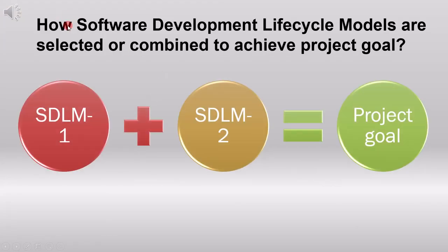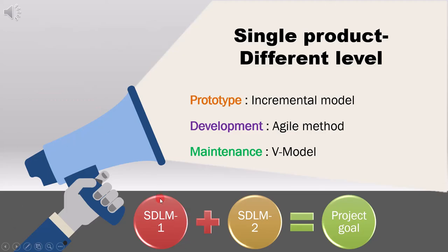Now we'll look at examples of how software development lifecycle models are selected or combined to achieve a project goal. Here we have two models of software development lifecycle — Model 1 and Model 2. We are not combining test levels and activities here, but two software development models in order to achieve the project goal.